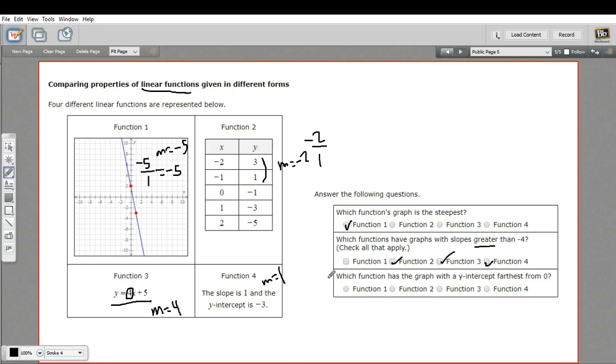And finally, we have which function has the graph with a y-intercept farthest from zero. So the y-intercept is where this graph crosses the y-axis. This one's at two. So the y-intercept is two.